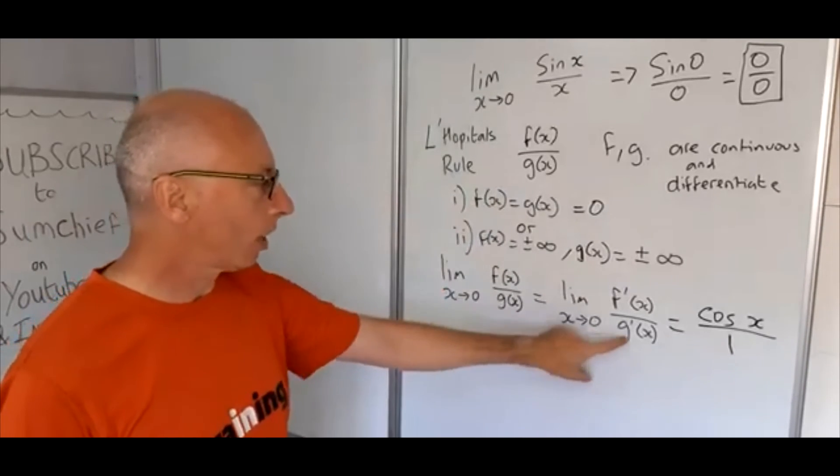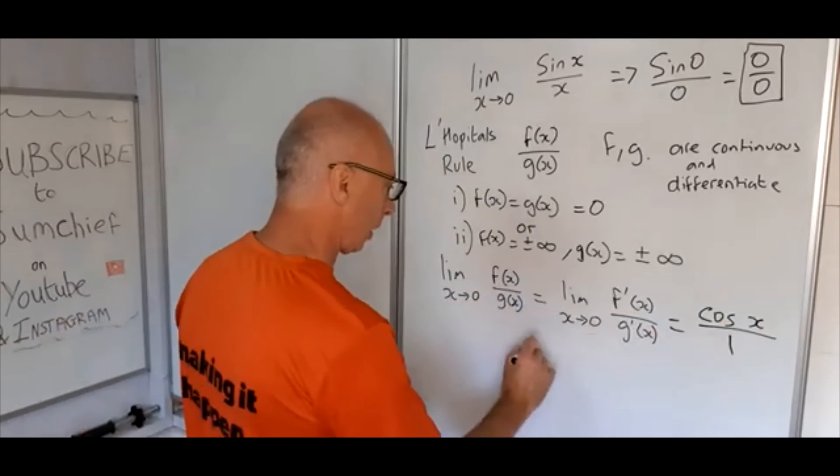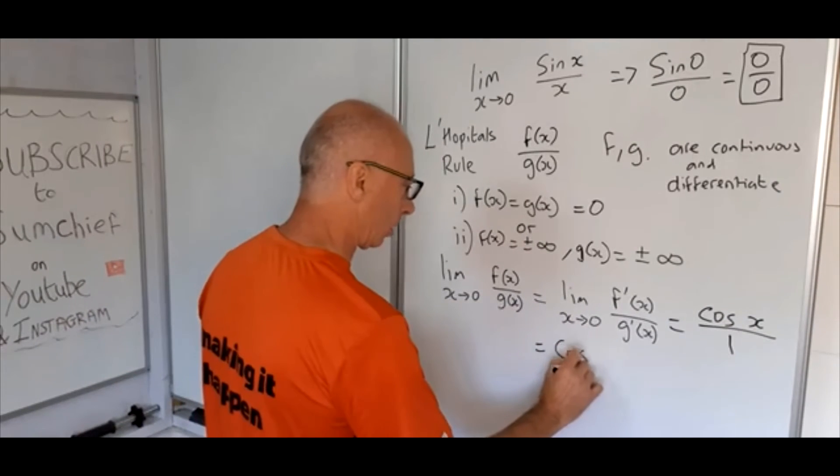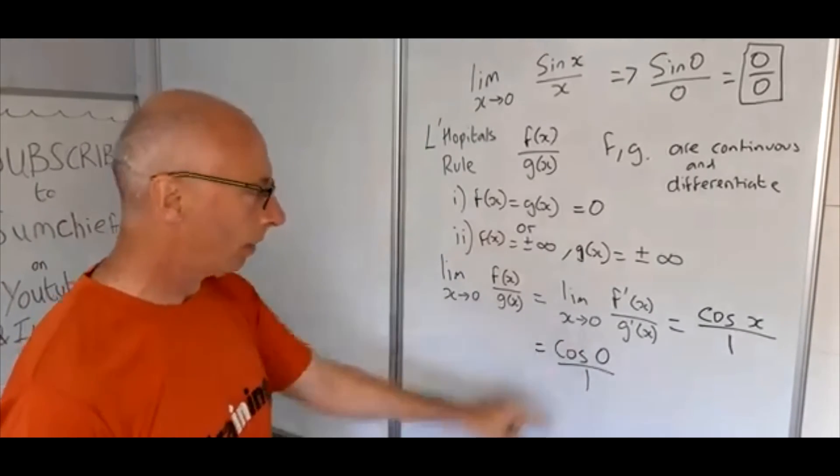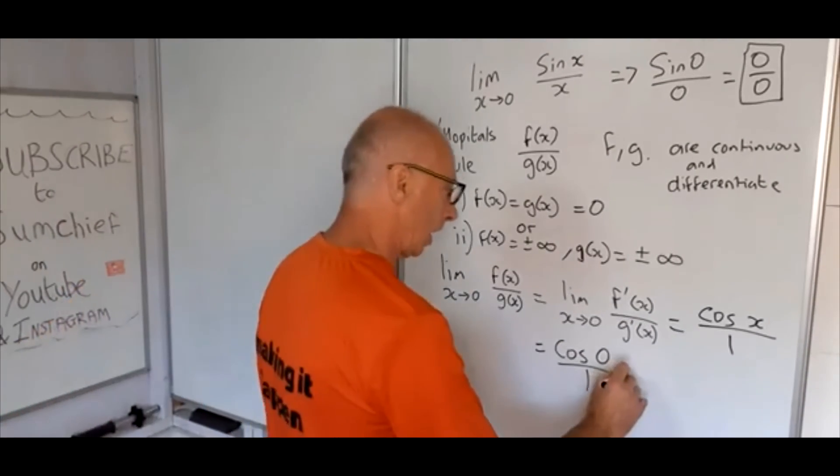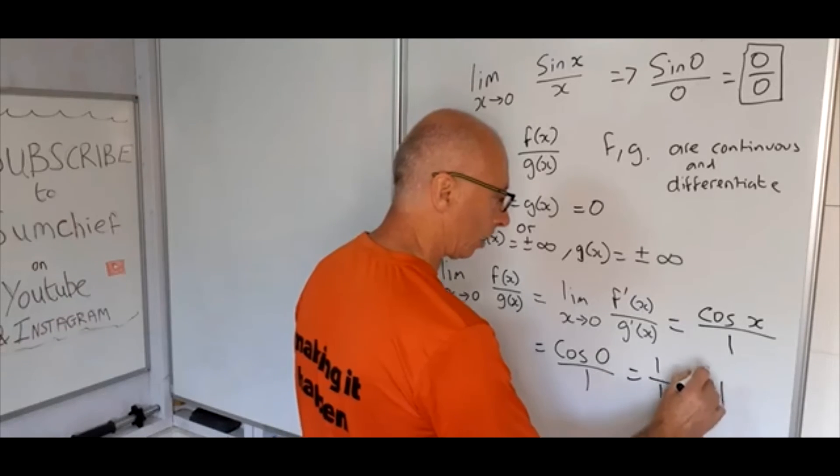Okay, so now we're going to plug in zero into this cosine x over one. So we get cosine of zero divided by one, one is one everywhere, doesn't matter what the value of x is. So we're getting one over one which gives us our answer of one.